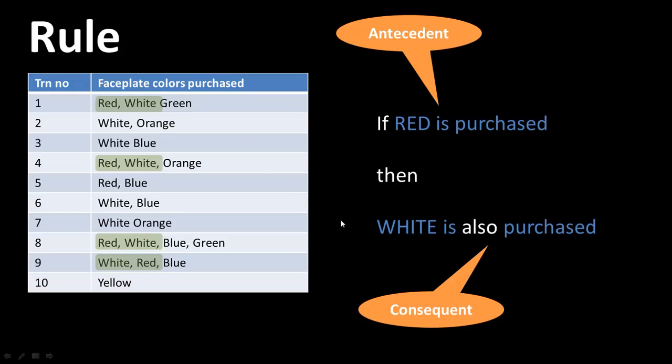However, there's the scenario here where you've got red, but white doesn't occur. So a rule could have cases in which it is successful and also cases in which it is not successful. We are not looking for an iron-clad guarantee, but all we are trying to do is to mine the data and find some positive features that we can exploit. We're not looking for certainty here.